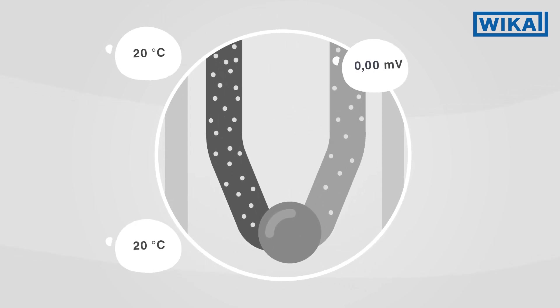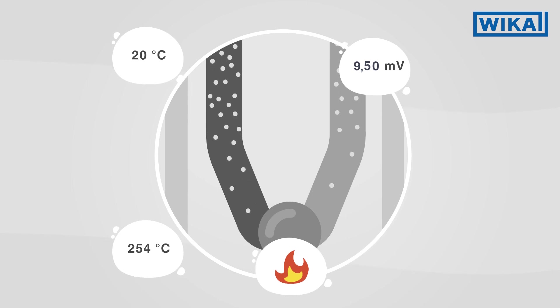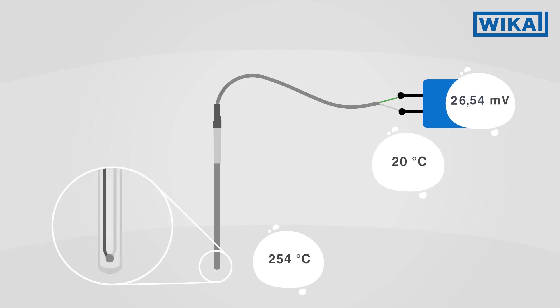When the temperature at the measuring point rises or drops, the electron density of each metal also changes. This altered electron density, i.e., the voltage, is measured at the wire ends.